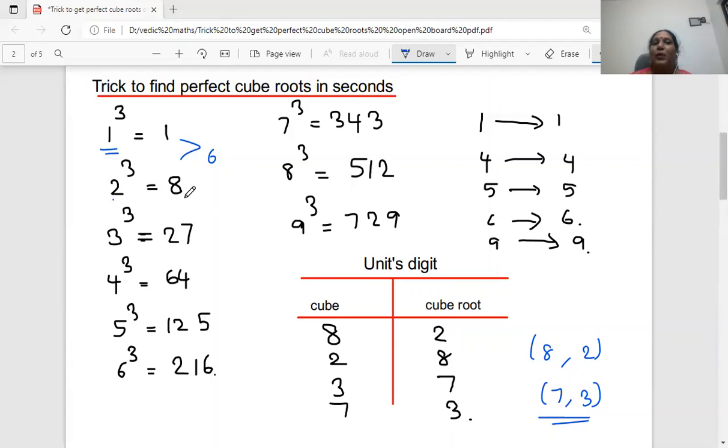And here 2 cube ends with 8. 2 cube is ending with 8. So 8 cube also ends with 2. So for 8 cube, if you do, you should get 2. For 2, if you do cube, then you should get 8. So similarly, 3, 7 also.